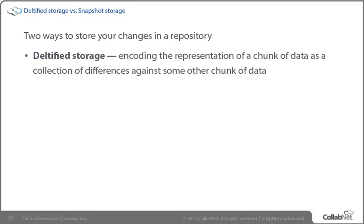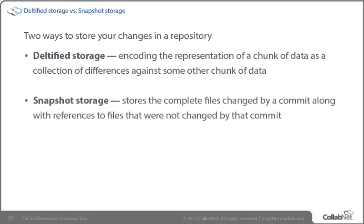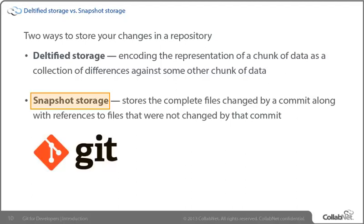The second approach is what we call snapshot storage. In that model, what we're actually keeping is the full contents of the modified files, plus reference pointers to everything we don't change. Basically, the storage gives us a snapshot of that particular point in time as a result of the changes being applied with the associated commit. This is the approach that Git utilizes, so we have a snapshot of exactly what everything in our repository looked like, reflective of the changes of each single commit.